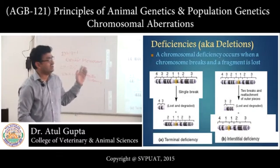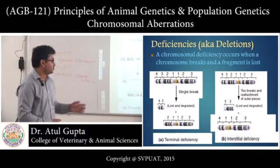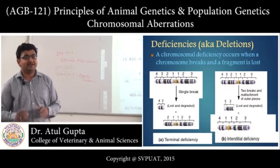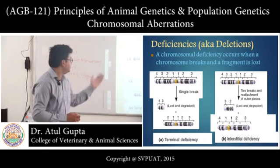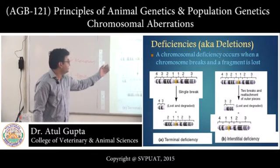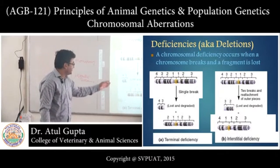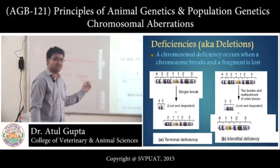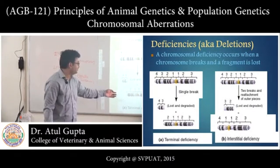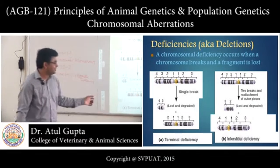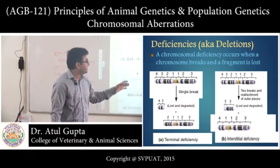Deficiency or deletion: a chromosomal deficiency occurs when a chromosome breaks and a fragment is lost. The first type is terminal deficiency, where the terminal portion of a chromosome breaks and is lost. In this case, with a single break between positions 2 and 3, the portion containing segments 3 and 4 will be lost, leading to a new arrangement. This is terminal deficiency because the terminal portion is involved.